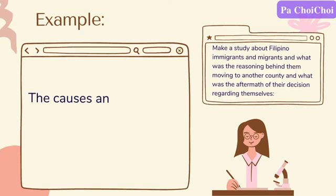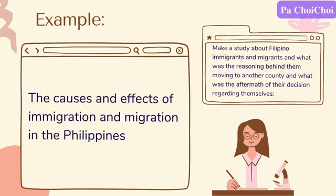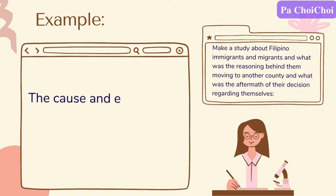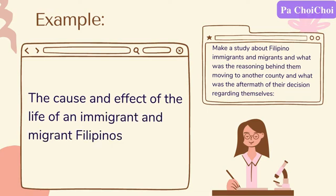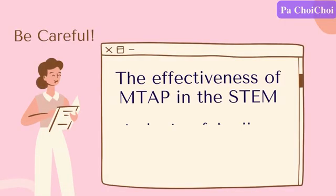The second proposed title was also unclear about whether the target participants include all people in the Philippines, including foreigners leaving the country. Since the main objective targets only Filipinos, not foreigners who moved here, this leads to the last proposed title: 'The Cause and Effect of the Life of Immigrant and Migrant Filipinos.' Here, the title is specific about its objectives, the scope of target participants is clear, and the title is short but informative.